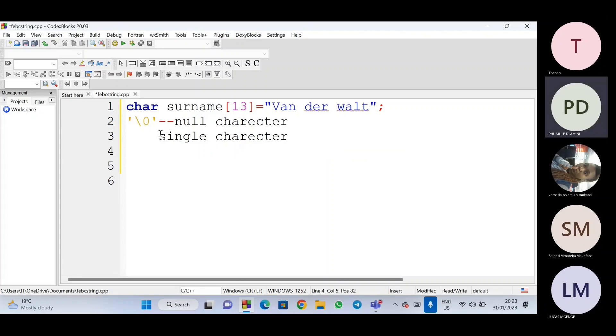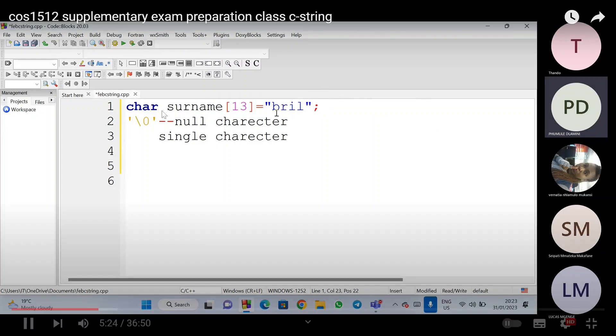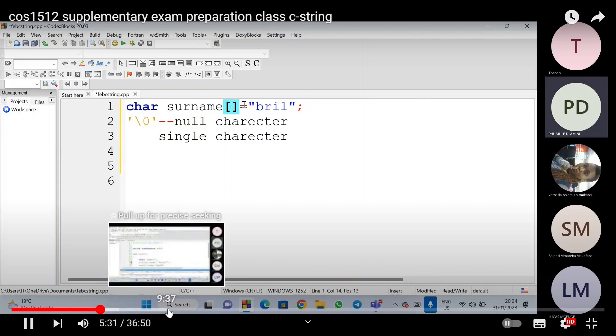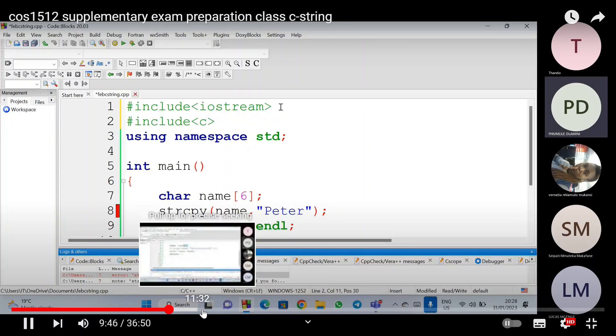You might think maybe it's two things but it's a single character. The single character slash zero. Also the same way when you're using slash N, your slash N is also a single character for end line. Every time when you are working with a C string you must accommodate this single character or the null character. So if for example I write a name, I can write maybe brilliant. You can see that here in my name it has one, two, three, four.